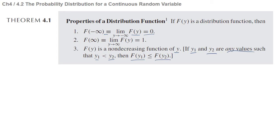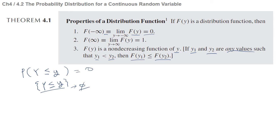These properties are fairly obvious. If y goes to minus infinity, the set {Y ≤ y} approaches the null set, so the probability goes to 0. As small y goes to infinity, the set {Y ≤ y} approaches the whole sample space S, so the probability of the whole set is 1, confirming the second property.